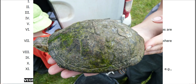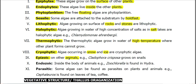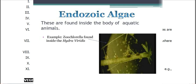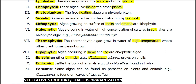Epizoic means the algae that grow on other animals, such as Cladophora, that grow on snails as well as on the shells of tortoises. Endozoic algae are the algae that grow inside the body of animals, such as Zoochlorella, that grows inside the body of Hydra.